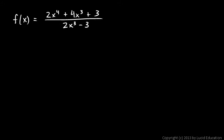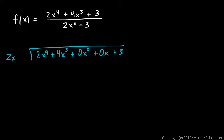Polynomial long division is kind of tedious and cumbersome, and we're only going to do this a couple of times before I explain the shortcut. But let's work through this one and see how it works and why. We want to set up the division: 2x to the fourth plus 4x cubed plus 0x squared plus 0x plus 3. Remember to include all the terms, even if they're 0. That's going to be divided by 2x cubed minus 3.